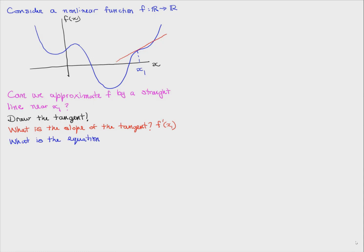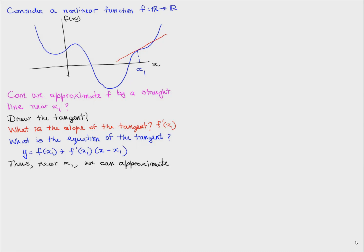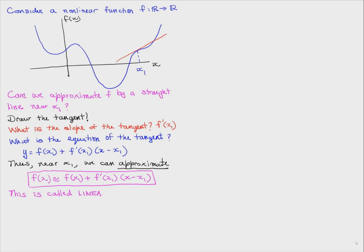What's the equation of the tangent? It's f of x1 plus f prime of x1 times x minus x1. We can see this just from the geometry. So near x1, we can approximate the non-linear function by f of x is approximately equal to f of x1 plus f prime of x1 times x minus x1. This is called linearization of the non-linear function near a point — we approximate a non-linear function by a constant plus linear function near a point.